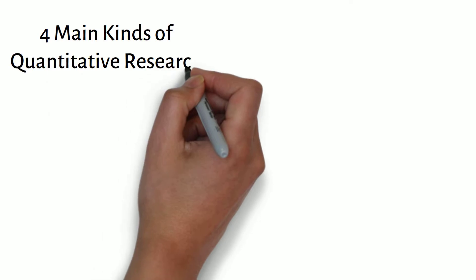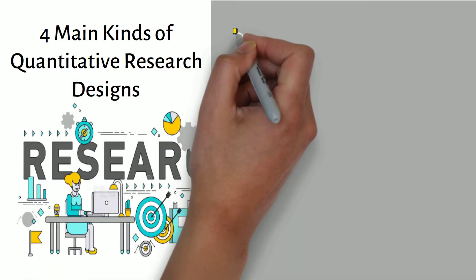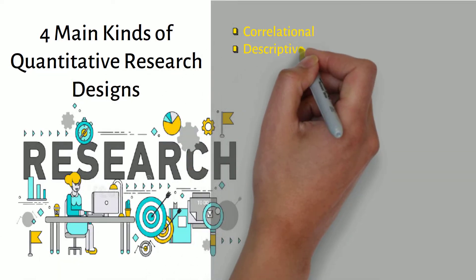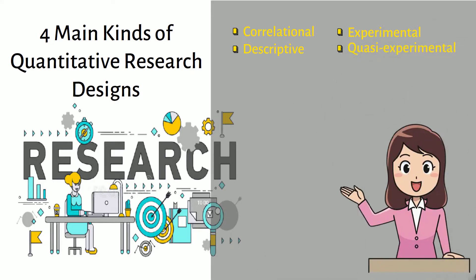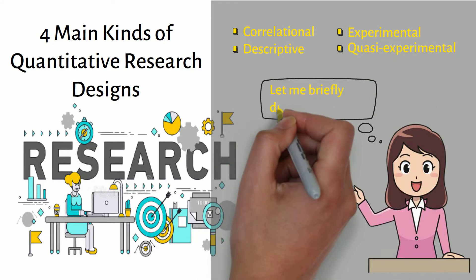There are four main kinds of quantitative research designs, namely: correlational, descriptive, experimental, and quasi-experimental. Let me briefly discuss each below.